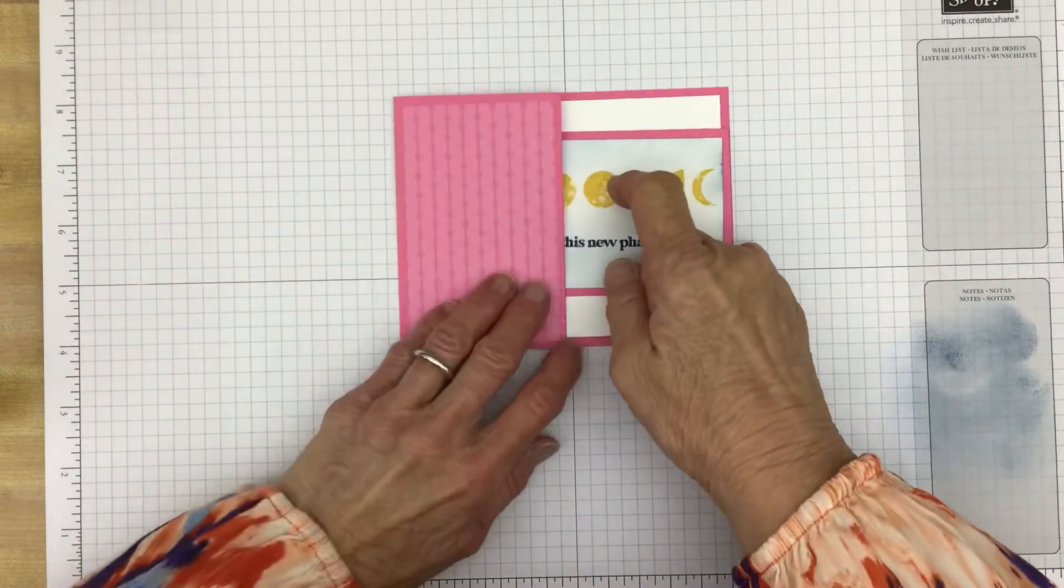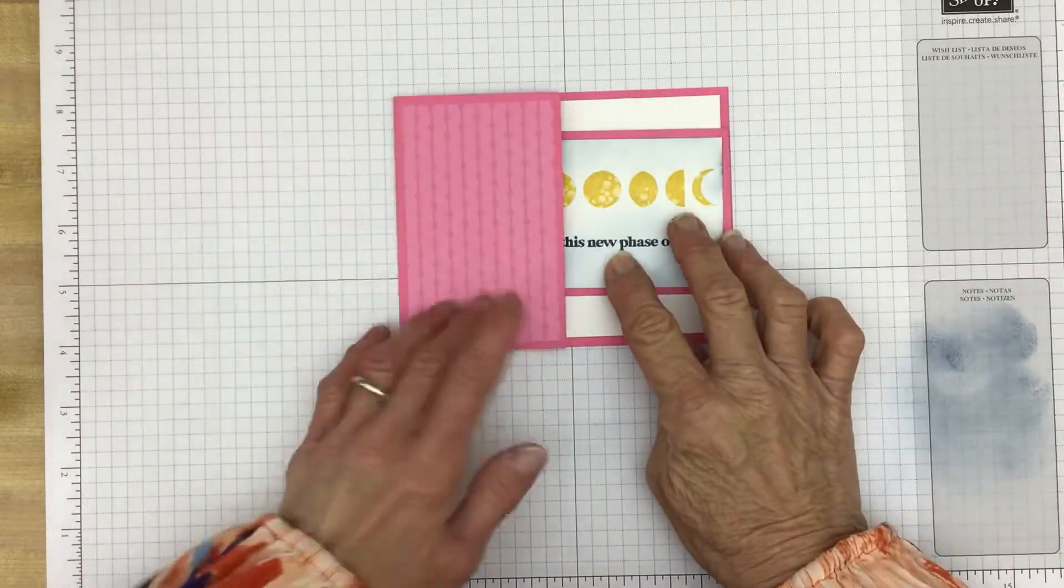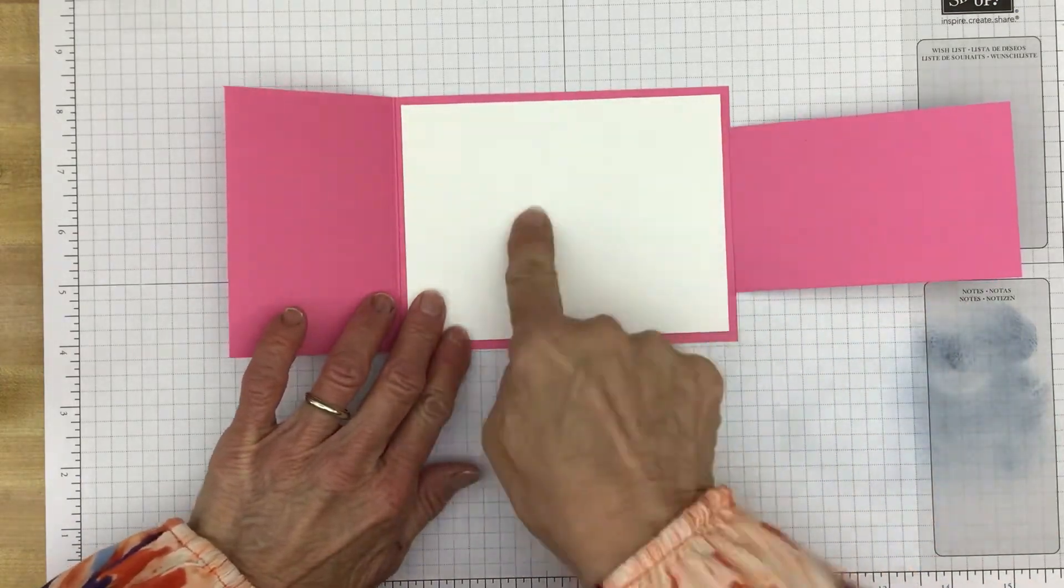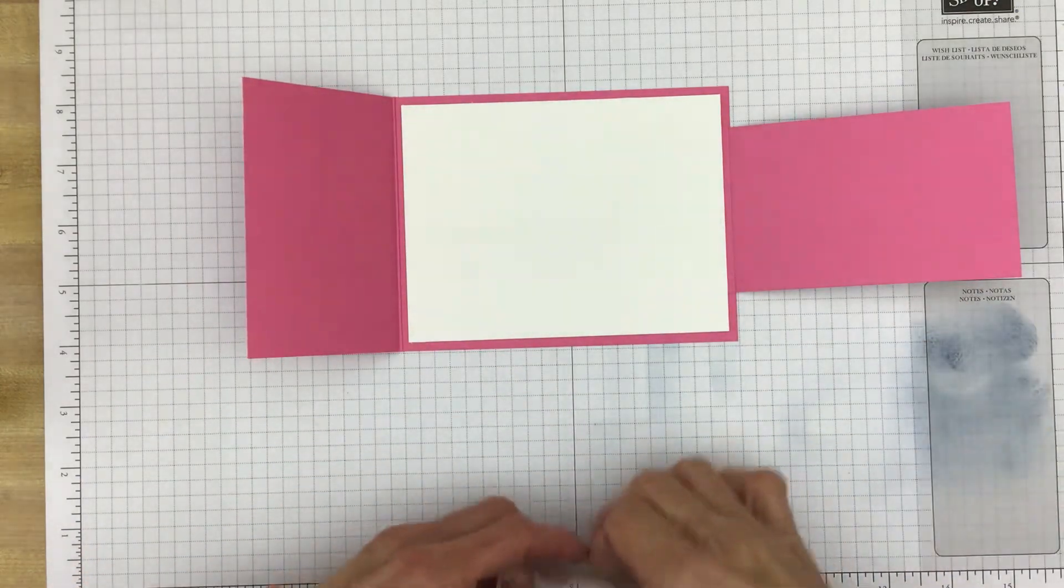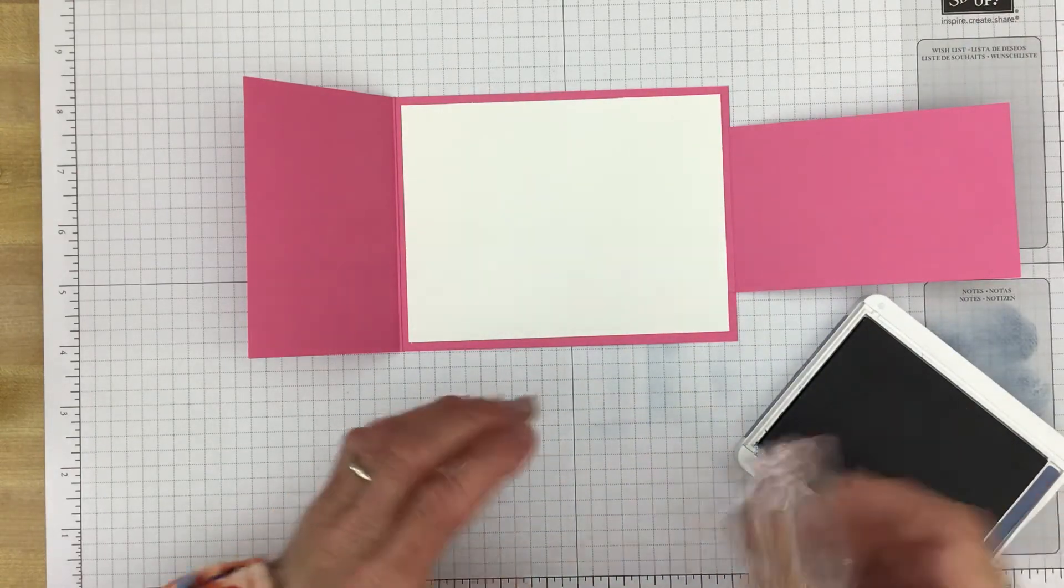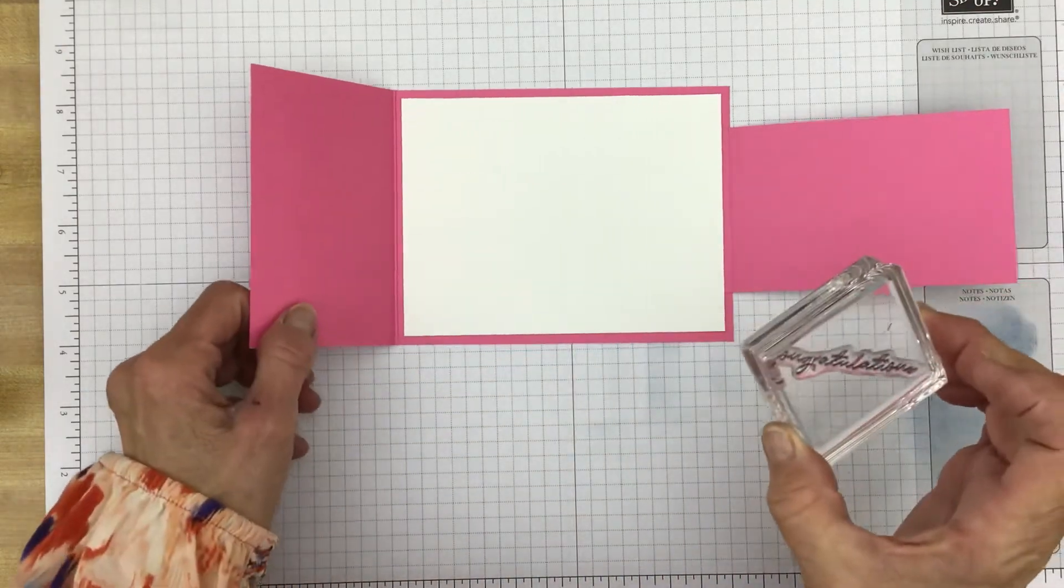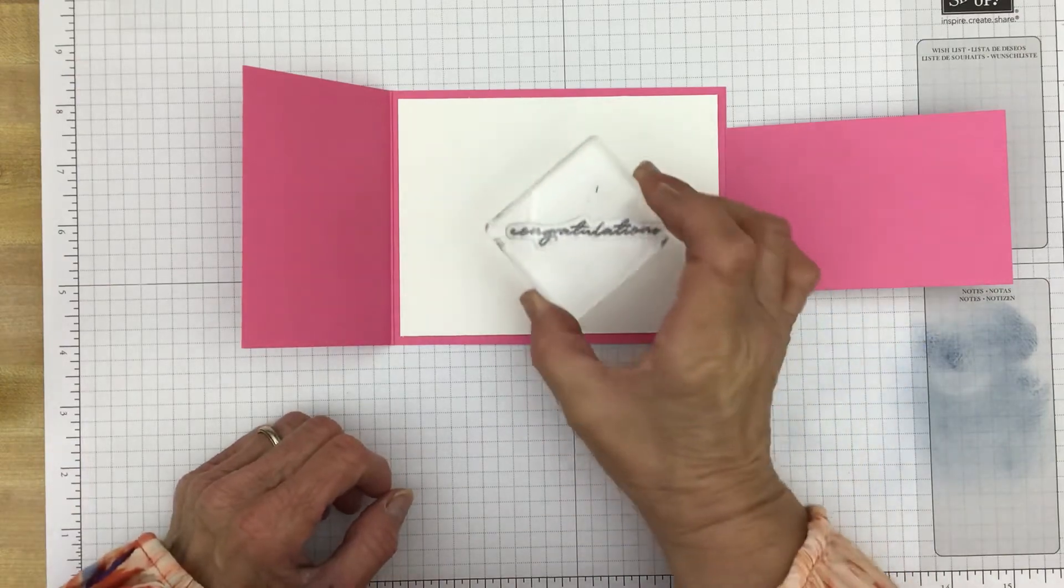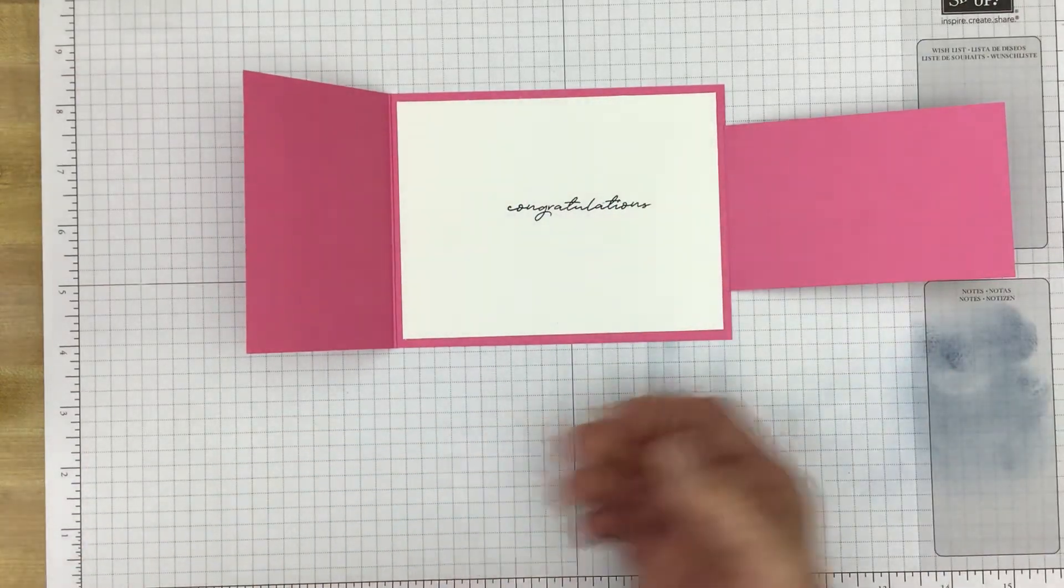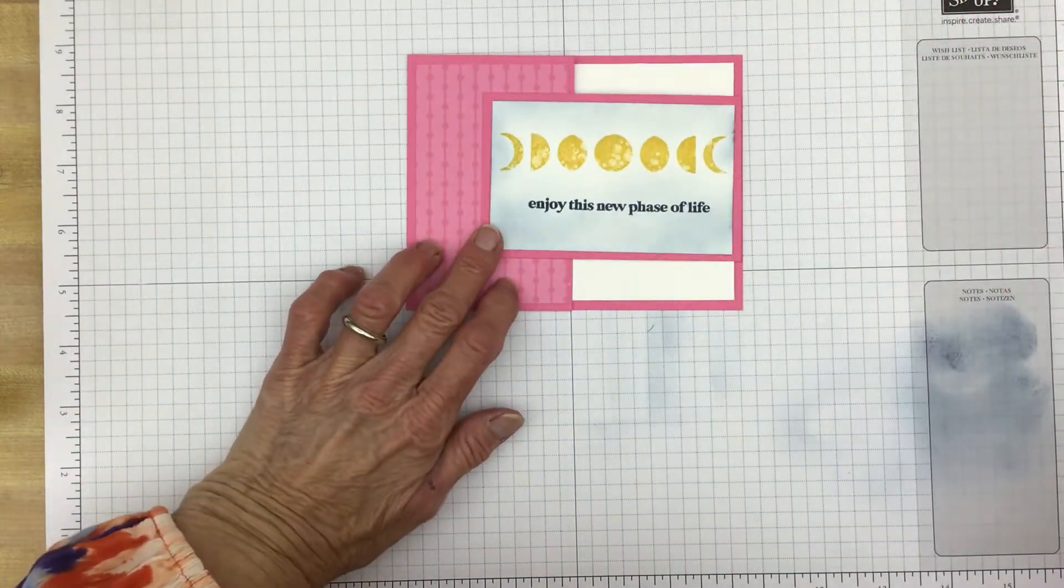There's that. There's that. So if I stamp Congratulations right in that area, right in here, we should be good. Of course, I have it covered up. There we go. There. And there's the card. It was just that easy.